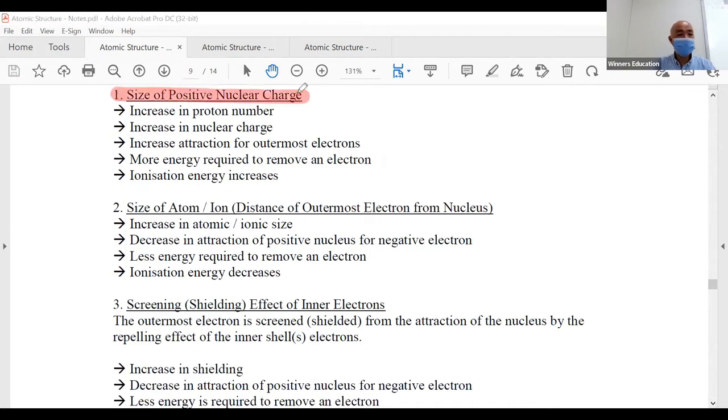First, size of positive nuclear charge, meaning the nucleus and the amount of protons inside. If there are more protons, the proton number increases. More protons means higher nuclear charge - the positive charge inside is higher. This creates increased attraction for the outermost electron, like a Romeo-Juliet relationship. More males will attract the female on the outside. Therefore, more energy is required to remove an electron, and ionization energy will increase.